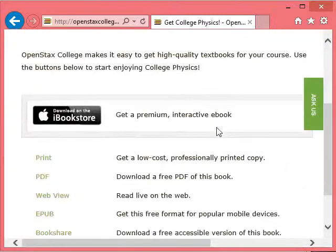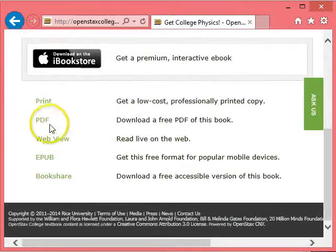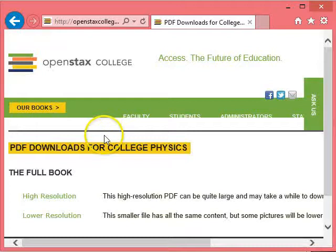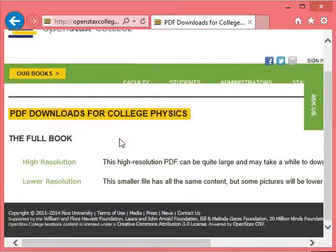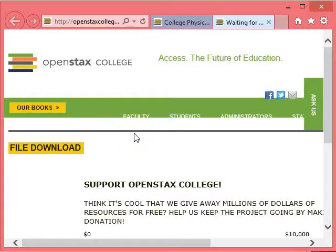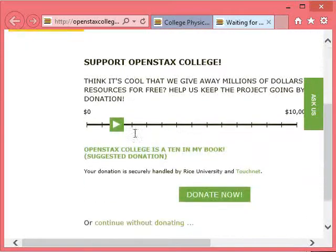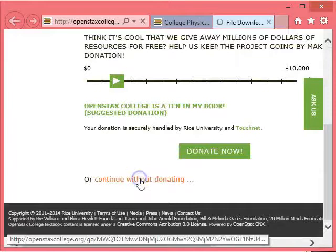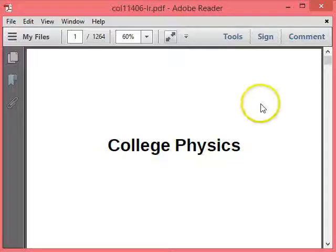There's different ways you can get it. I would just download a free PDF of this book, click that. You can choose between high or low resolution, depending on your internet speed. Let's choose high. It asks you for a donation, you can continue without donating, and it downloads.